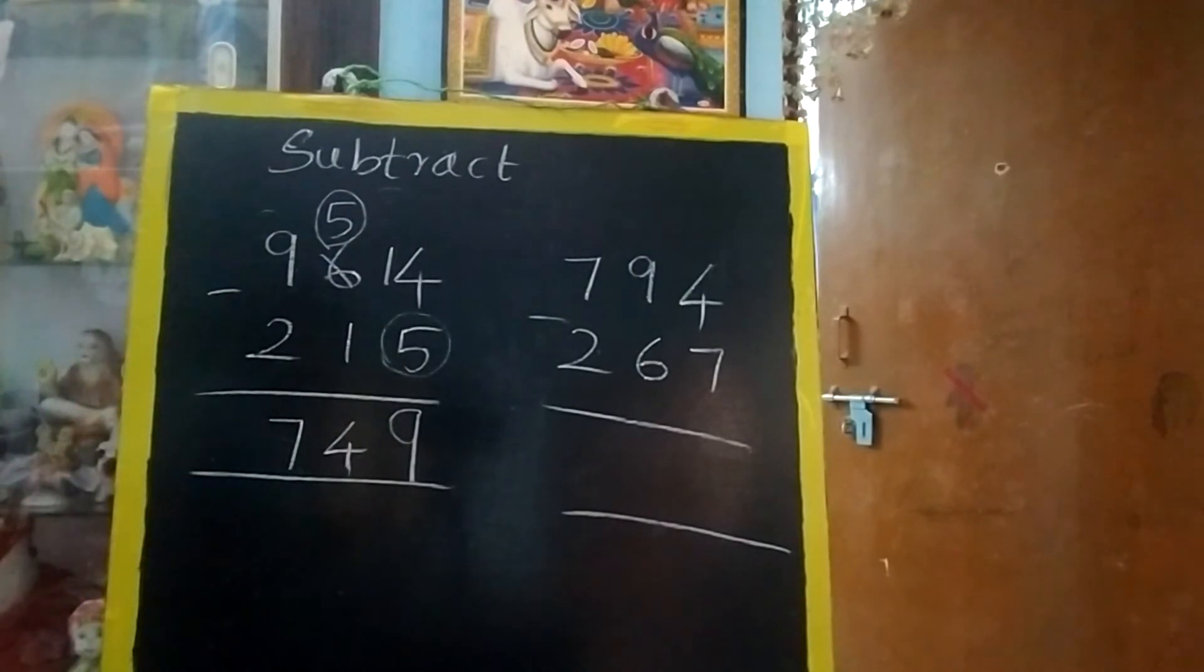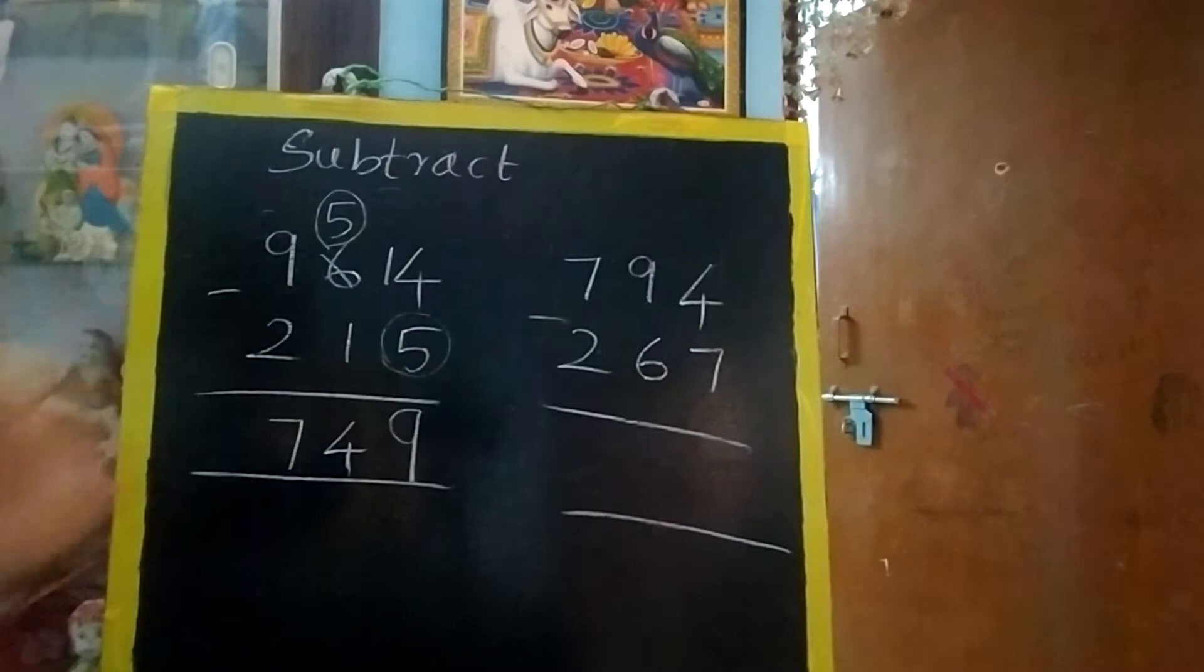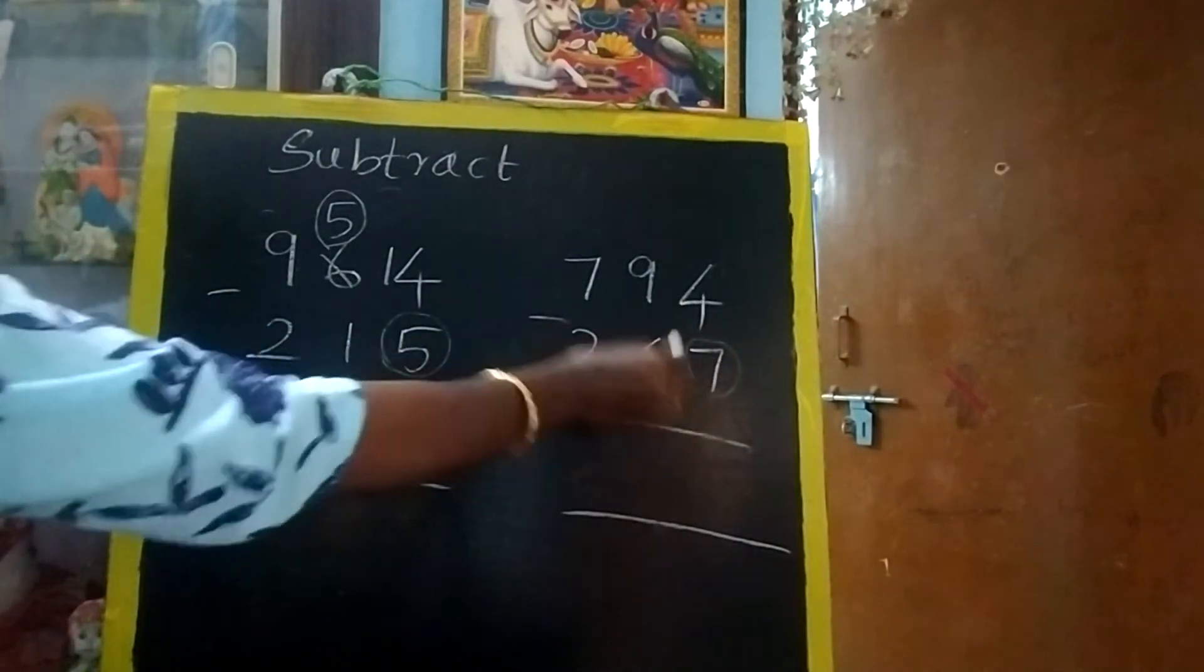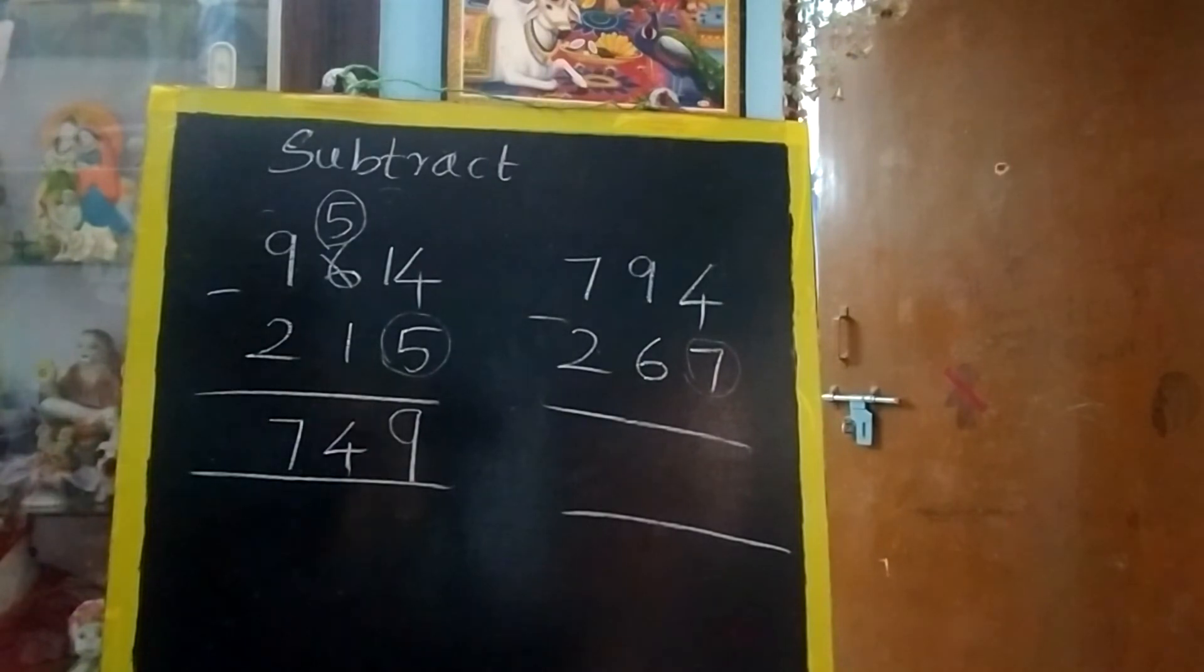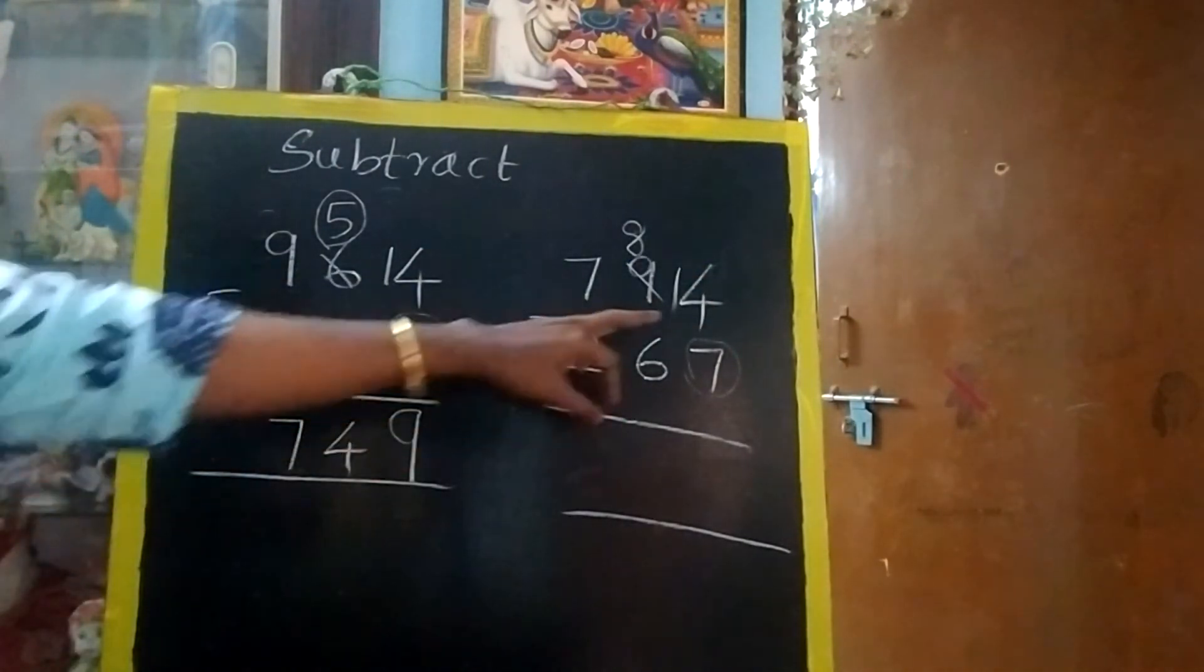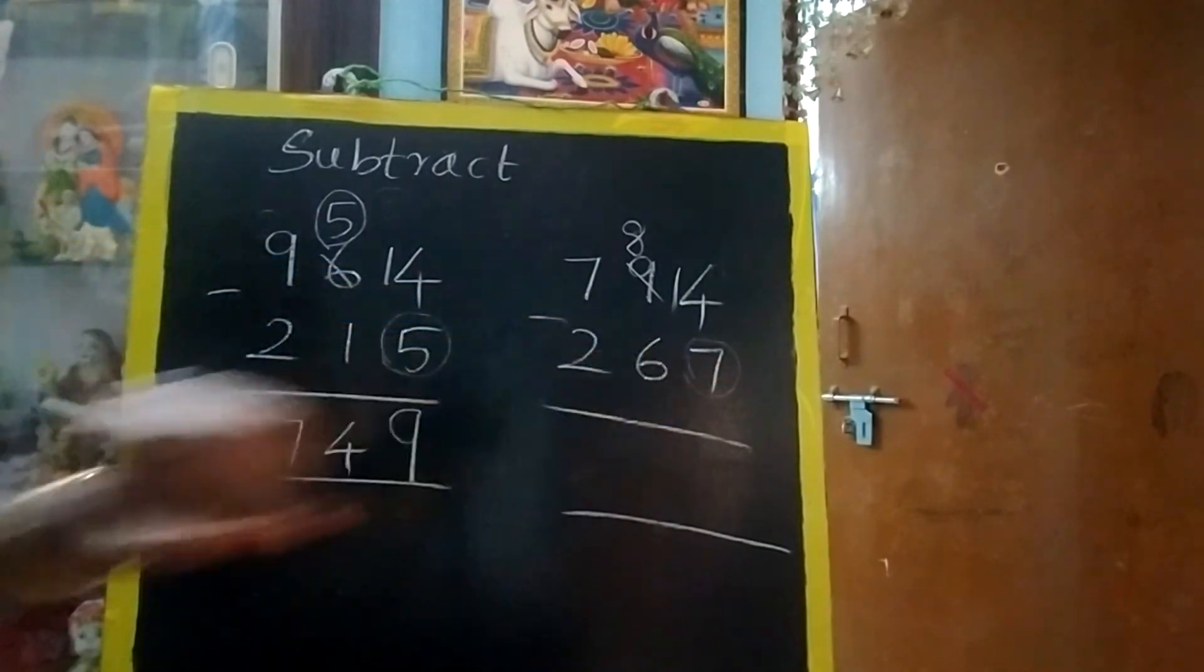You should have patience to think. Should we borrow? Then only you have to proceed to the next. Don't subtract from down to up. That is incorrect method. Now again start from one's place. 4 is greater or 7 is greater? 7 is greater. Circle is down. Should we borrow? Yes, you have to borrow. 8, 1. So it becomes 14. 14 minus 7, 7.